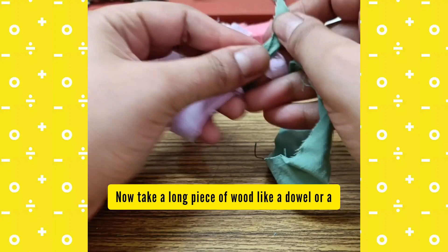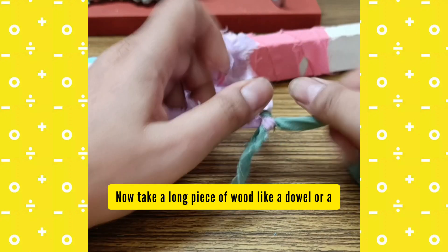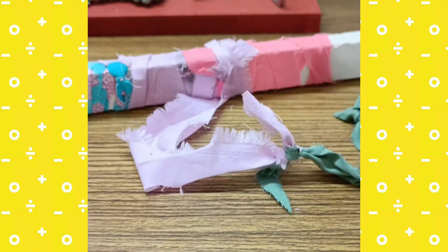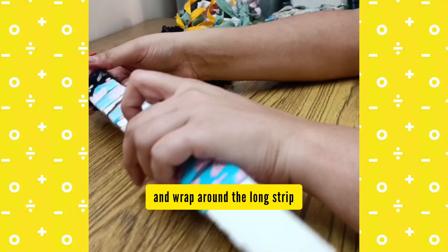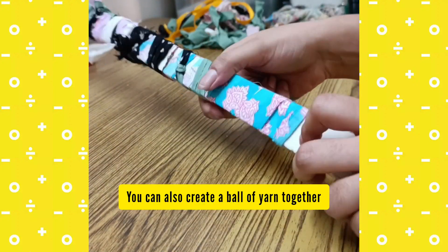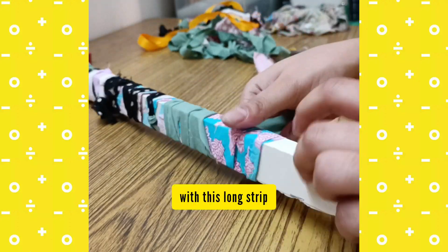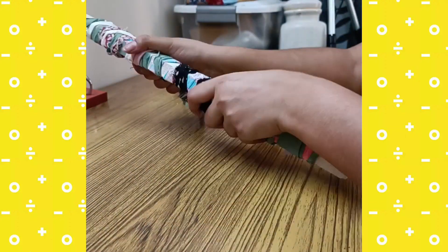Now, take a long piece of wood like a dowel or ruler and wrap around the long strip that you have created by joining the small strips. You can also create a ball of yarn together with this long strip, store it and use it for your various projects.